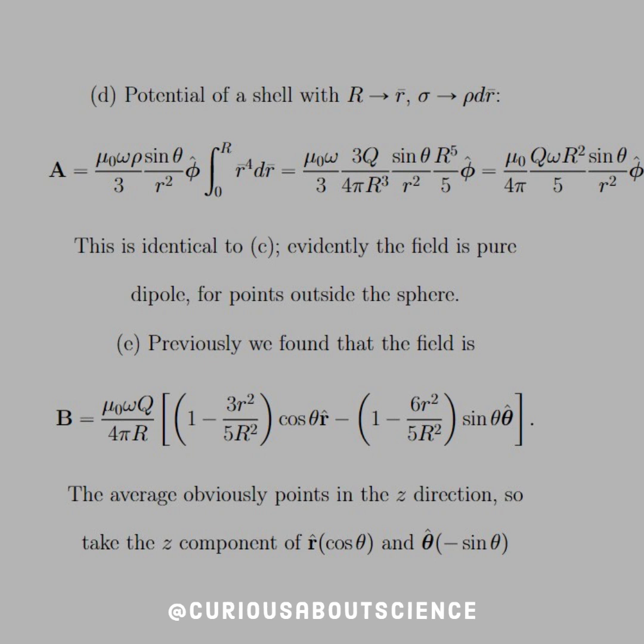Now we get to verify these results with the next step. So the potential of this shell with capital R going to little r and sigma going to rho dr, similar trick, then we'll integrate out. We need to find this potential, which we do. So once we integrate out and simplify, we end up with the vector potential A equal mu naught over 4 pi Q omega R squared over 5 sine theta over little r squared phi hat direction.